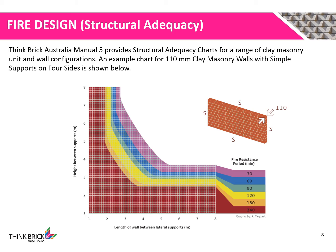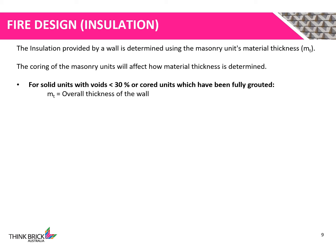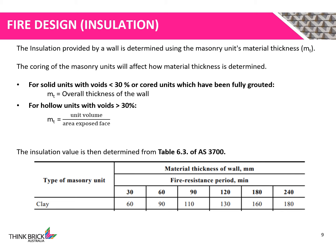An example chart for a 110mm thick clay masonry wall simply supported on all four sides is shown. The insulation provided by a wall is determined by the masonry unit's material thickness. Coring of masonry units will affect how the material thickness is determined. For solid units with voids smaller than 30%, or cored units which have been fully grouted, the material thickness is equal to the overall thickness of the wall. For hollow units with voids greater than 30%, the material thickness is equal to the unit volume divided by the area of the exposed face. Once material thickness is determined, Table 6.3 of AS 3700 can be used to identify the insulation fire resistance period.